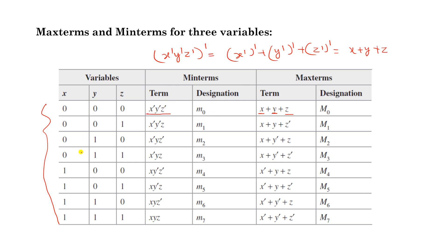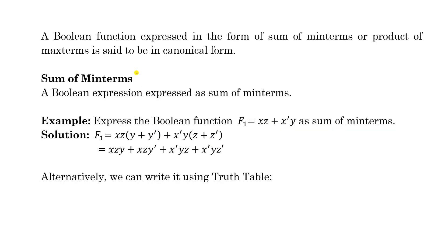Min terms are designated with a small m with subscript 0 through 7, and max terms with capital M up to M7 for three variables. A boolean function expressed as a Sum of Min Terms or Product of Max Terms is said to be in canonical form or normal form. Now let us look at how to express a given expression in these normal forms.